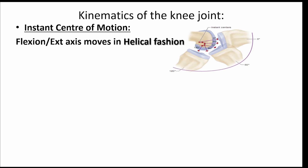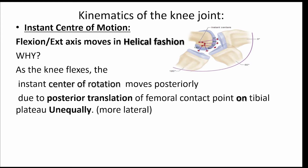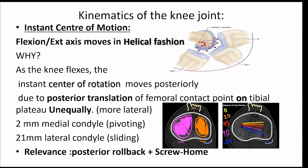This instant center moves posteriorly during flexion of the knee in an unequal situation, where posterior translation of the femoral condyle on the medial side is only 2 mm and on the lateral side is 21 mm. This unequal translation is responsible for two phenomena.